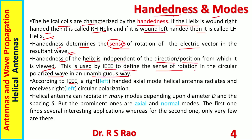According to IEEE, a right- or left-handed axial mode helical antenna radiates and receives right or left circular polarization respectively. If a wave can be received by a right-handed axial mode helical antenna, then it is right-circular polarization — that is how it is defined. So the polarization or sense of polarization of a wave from a helical antenna is defined with respect to the axial mode helical antenna.